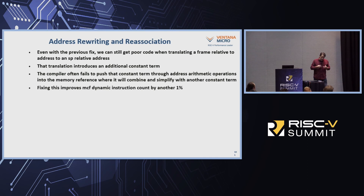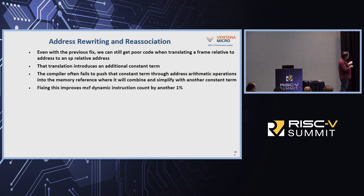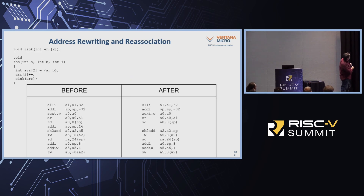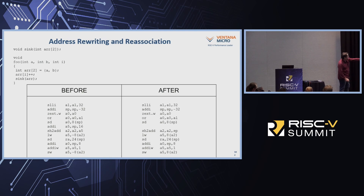Even with the previous fix, we're still finding cases where that strange FP-to-SP translation was creating redundant code. MCF gets about one percent from this. You can see we have an ADDI of 16 to SP that should be pushed down into the store instruction — on the right-hand side we've changed negative eight to positive eight and removed the ADDI. This is about one percent for MCF.